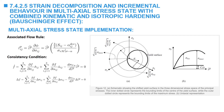The consistency condition can be applied similarly to the isotropic hardening model, with the addition of terms related to the increments in the back stress. Note that the derivatives of the yield function with respect to sigma_ij and alpha_ij are negative of each other, and the expression is given here.